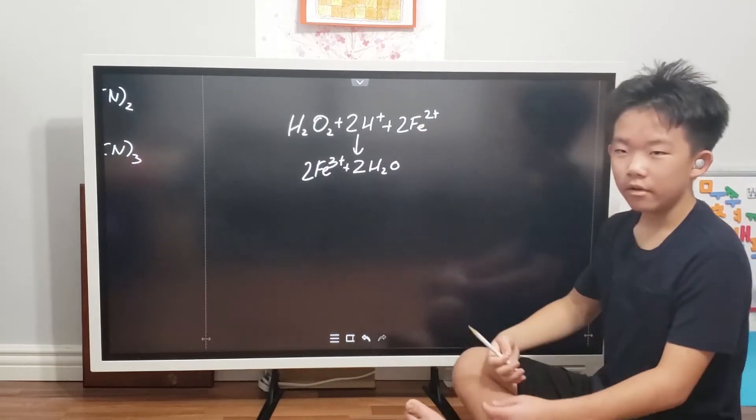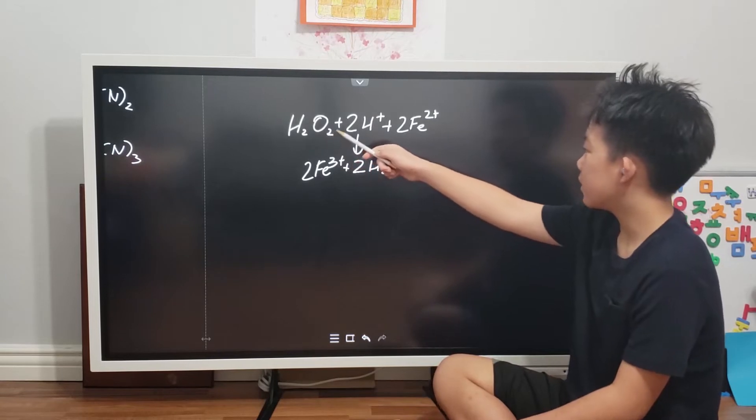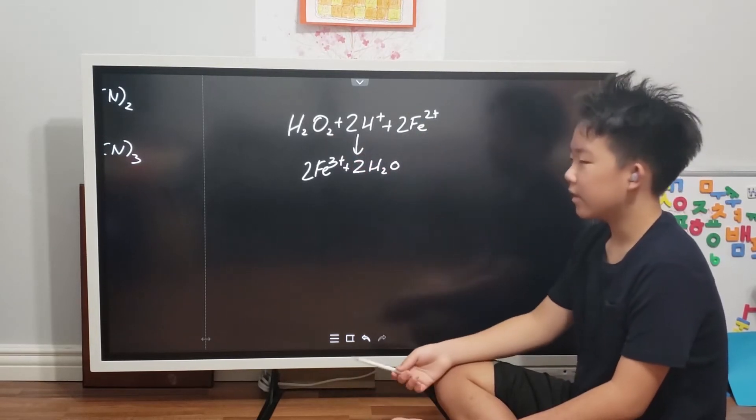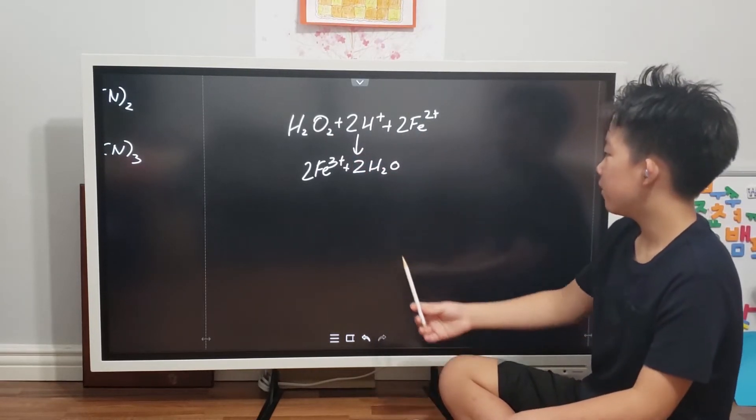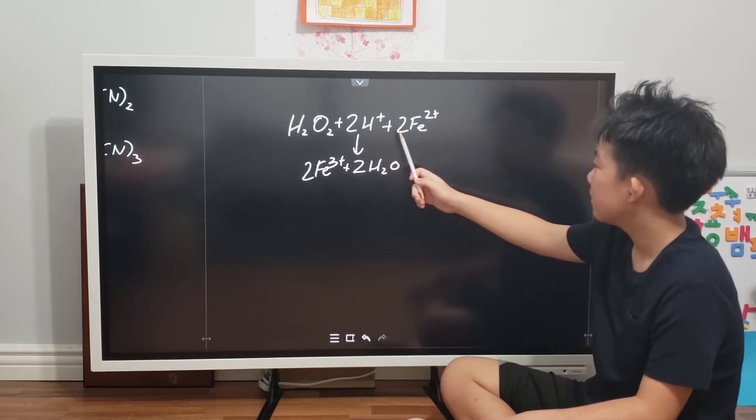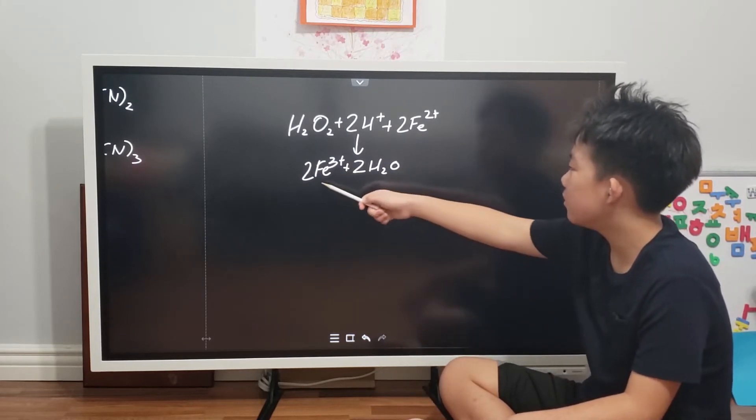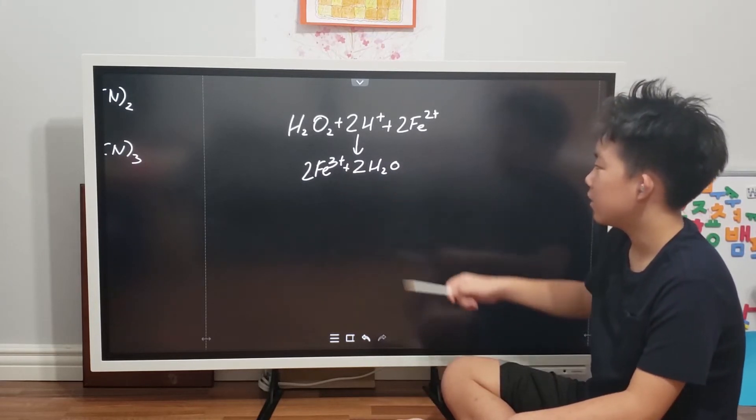Next, if there are any acidic protons left in the solution, the hydrogen peroxide and iron-2 will react with it to form this equation. H2O2 plus 2H+, plus 2Fe2+, equals 2Fe3+, plus 2H2O.